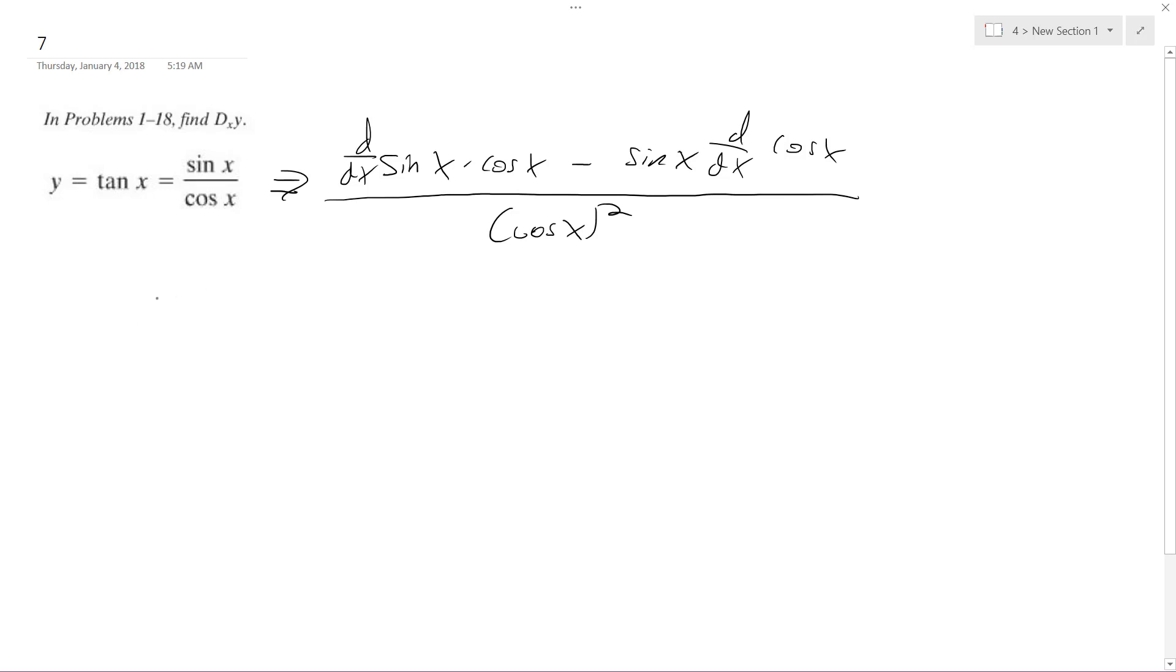So, derivative of the sine of x is cosine of x times cosine of x minus sine of x times derivative of the cosine of x is minus sine of x all over cosine squared of x. So we get cosine squared x, and then this becomes plus sine squared x over cosine squared x.